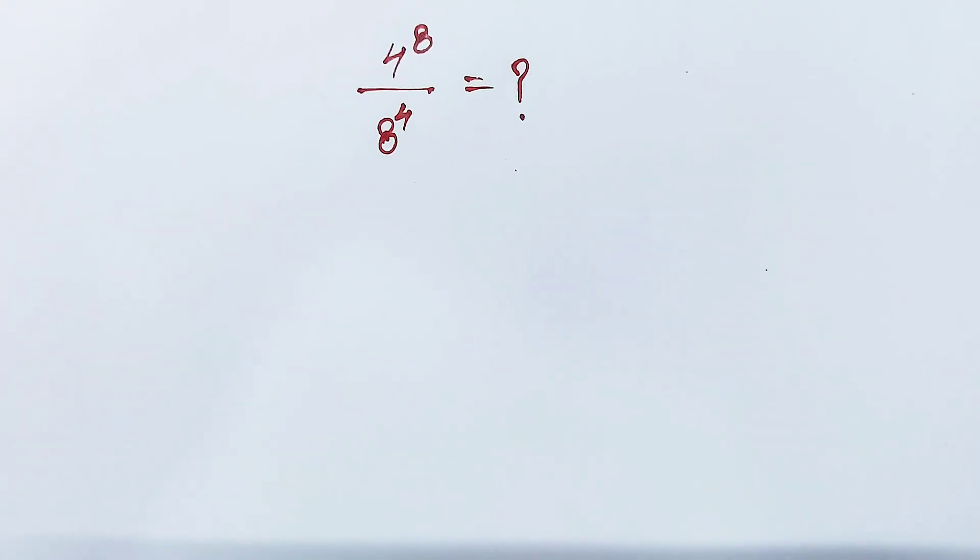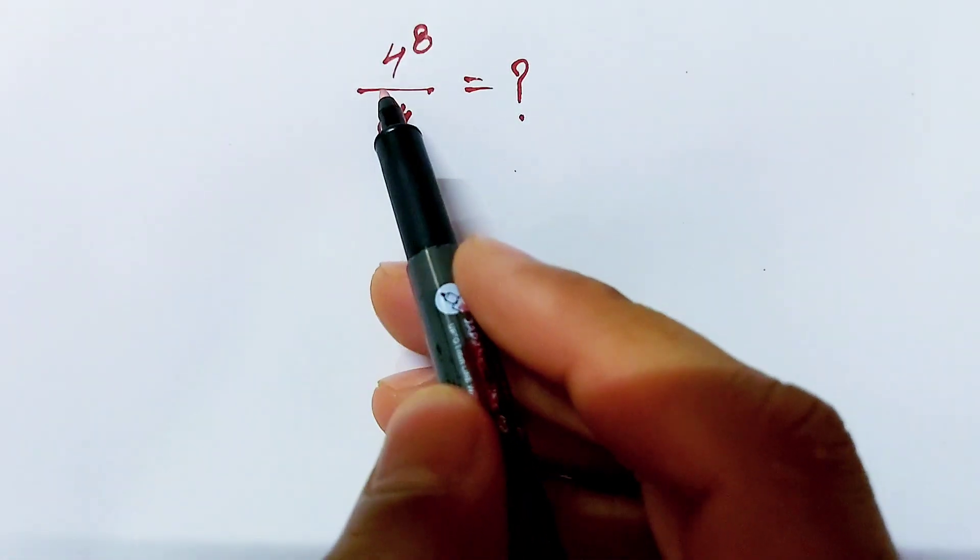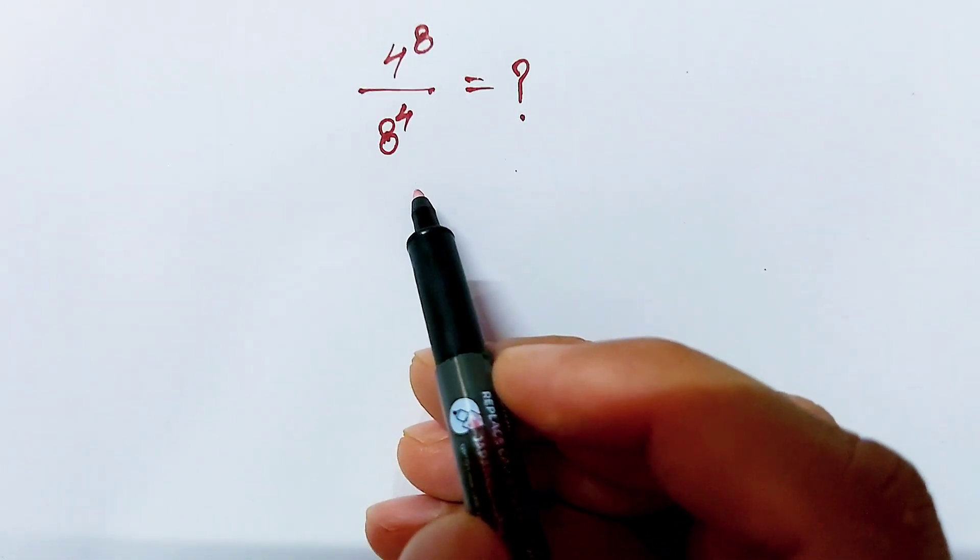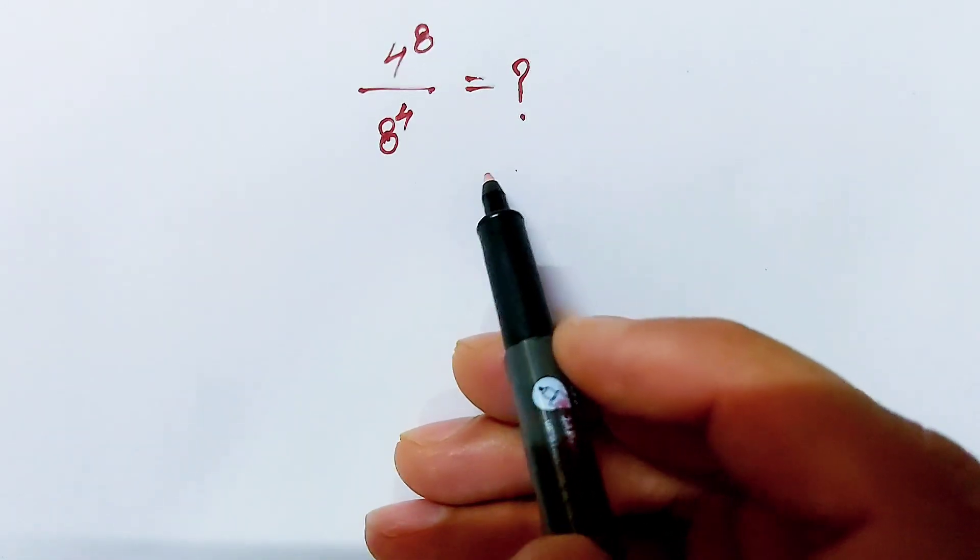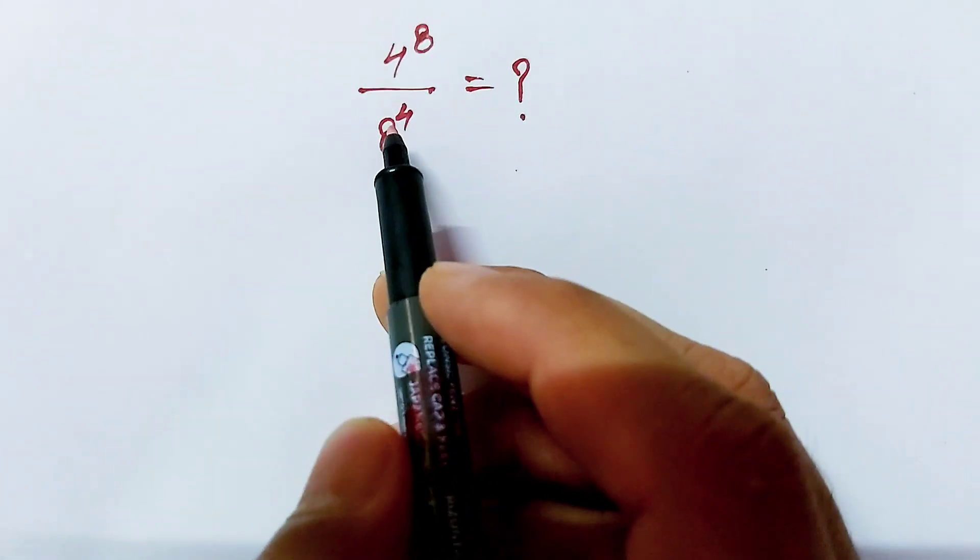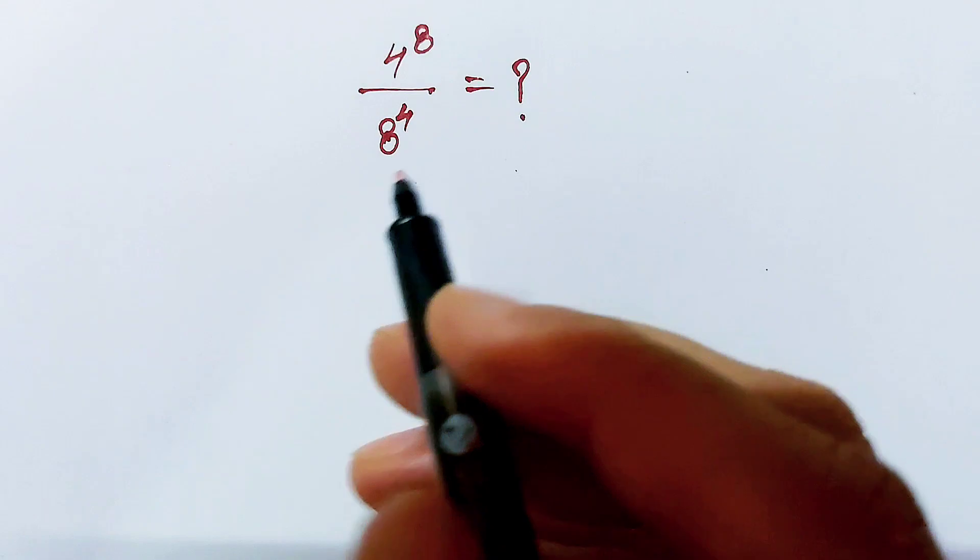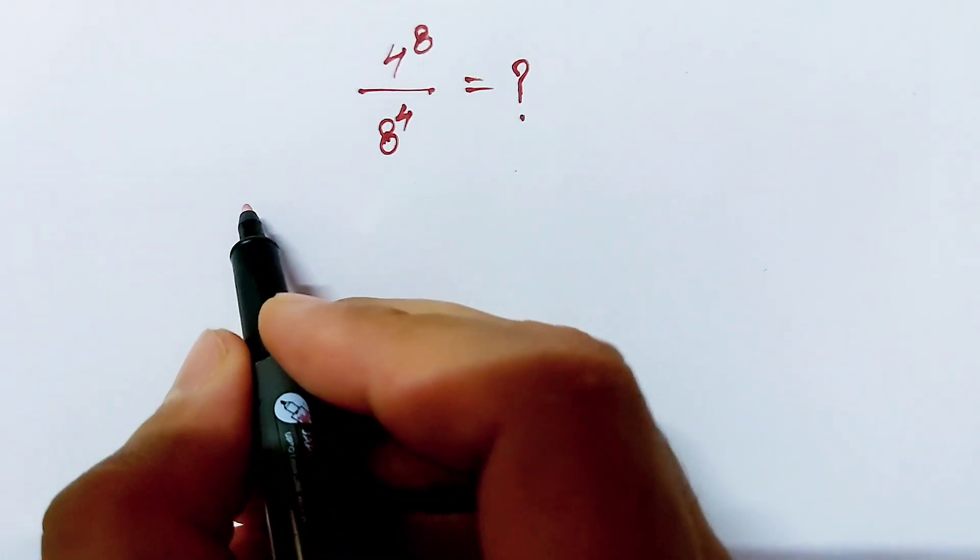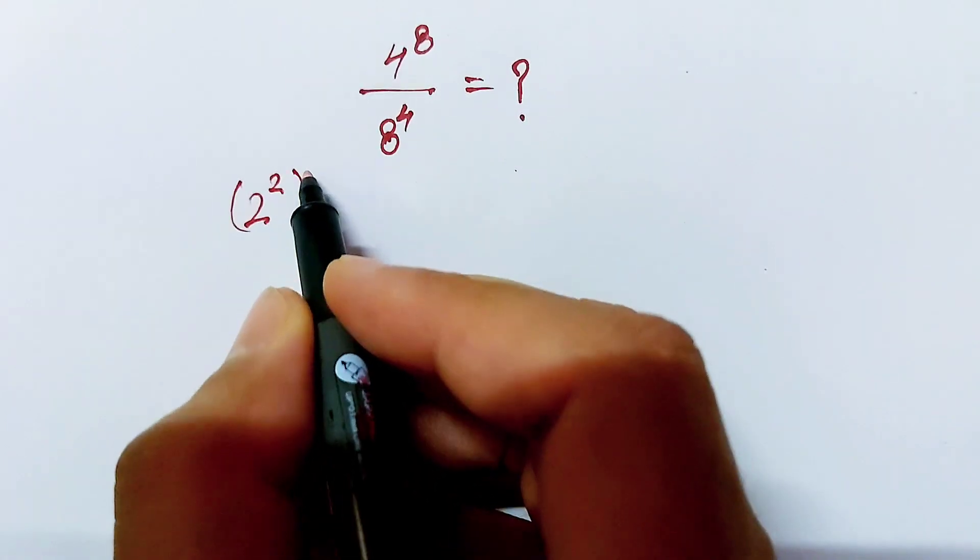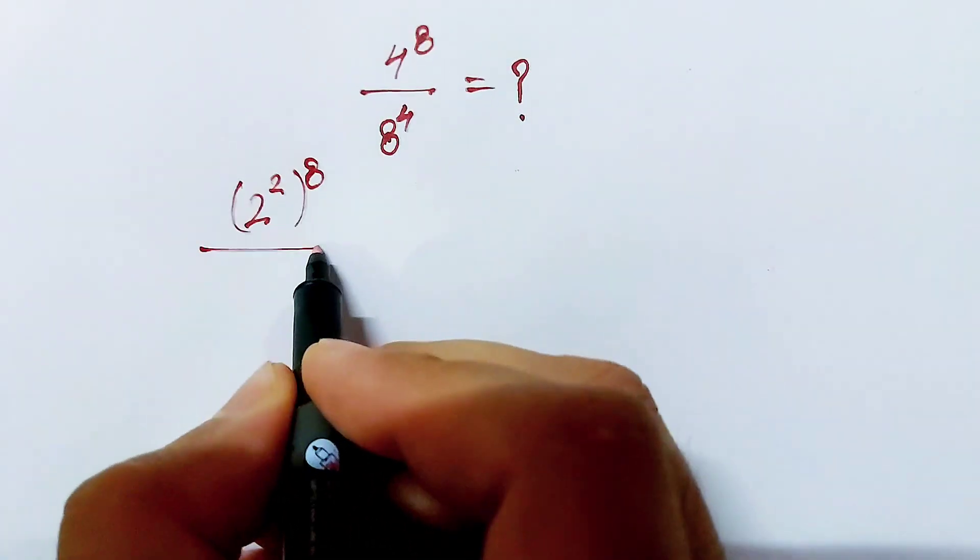Hello, the question is 4^8 divided by 8^4, and we have to simplify this expression. Let's find out. So first of all, this 4^8 is same as 2^2 and whole power 8.